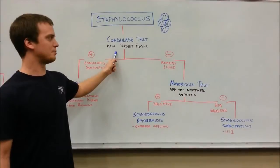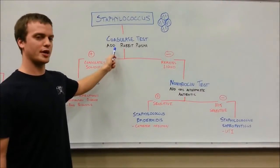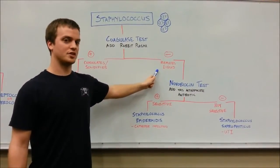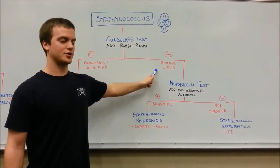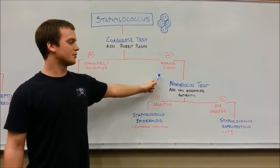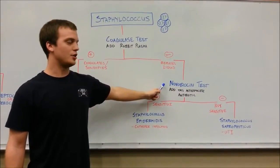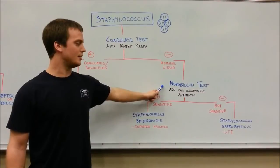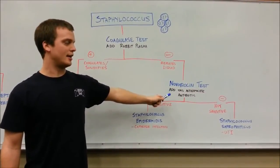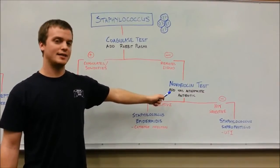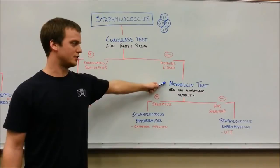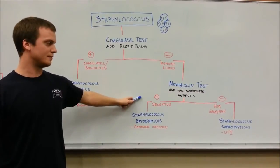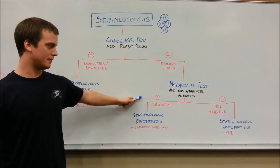If, upon addition of rabbit plasma in your coagulase test, your organism remains liquid or does not coagulate or solidify, you'll then need to perform a Novobiocin test. In this test, you'll add an actinomycete antibiotic known as Novobiocin, and if your organism is sensitive to this antibiotic,